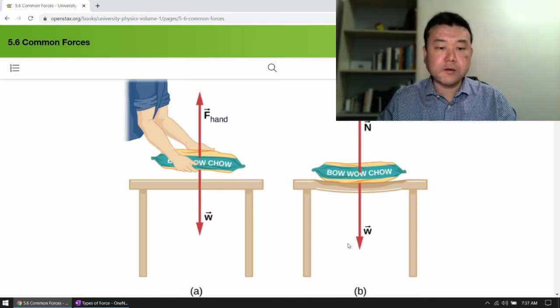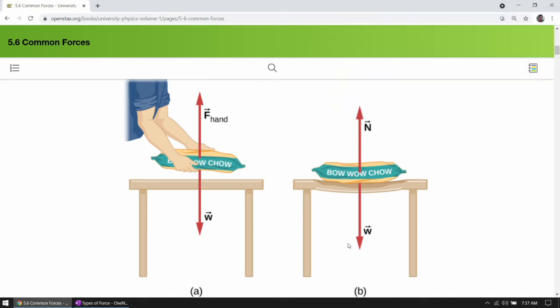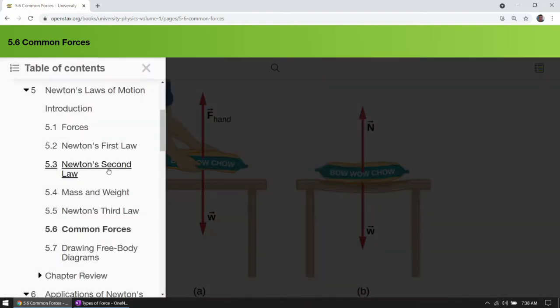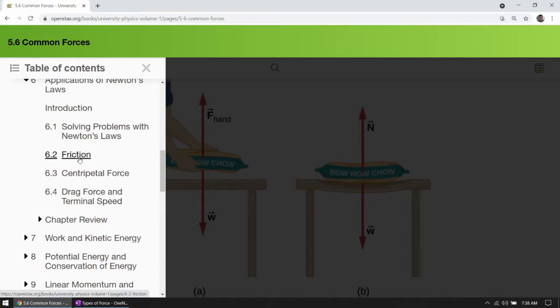So that's normal force. You will see it in quite a few contexts. In some situations, we ignore its existence, and in other situations, we make sure we include this force in our analysis. The types of situations where we have to make sure that we include normal force will often involve a friction force, which your textbook covers in the next chapter.